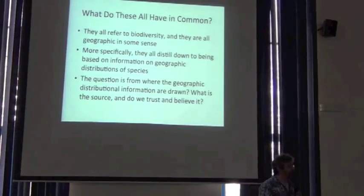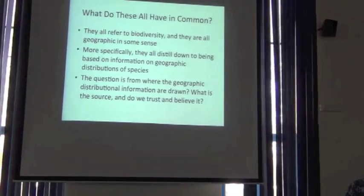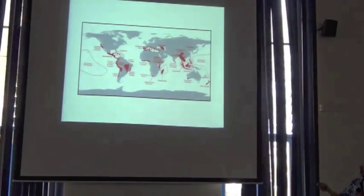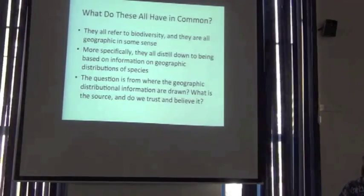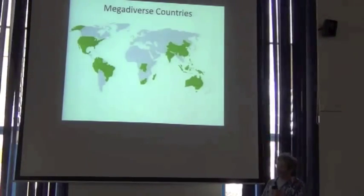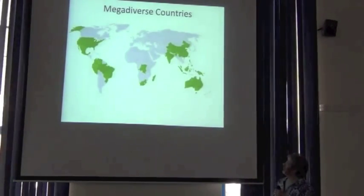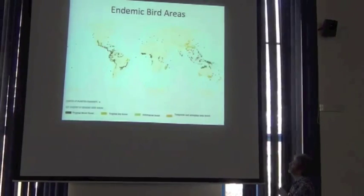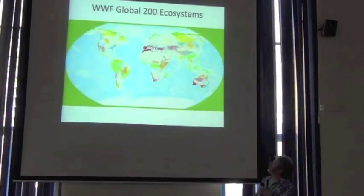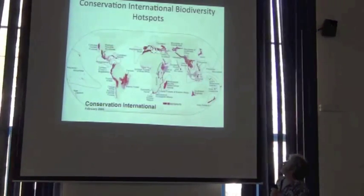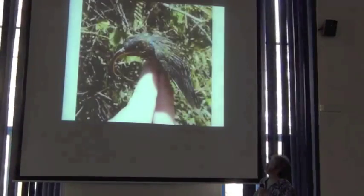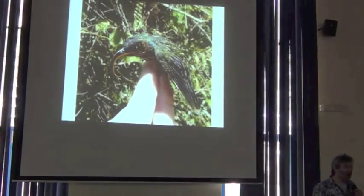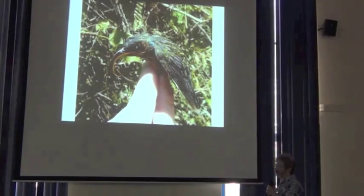My question for you is: where does that geographic information come from? When we look at something summarizing some aspect of biodiversity distributions, where did that geographic information come from? And how much do you believe it? Here are the mega-diverse countries. Do you believe it? Endemic bird areas, global 200 ecosystems, biodiversity hotspots — it all comes back to species, to individual species and where they are.